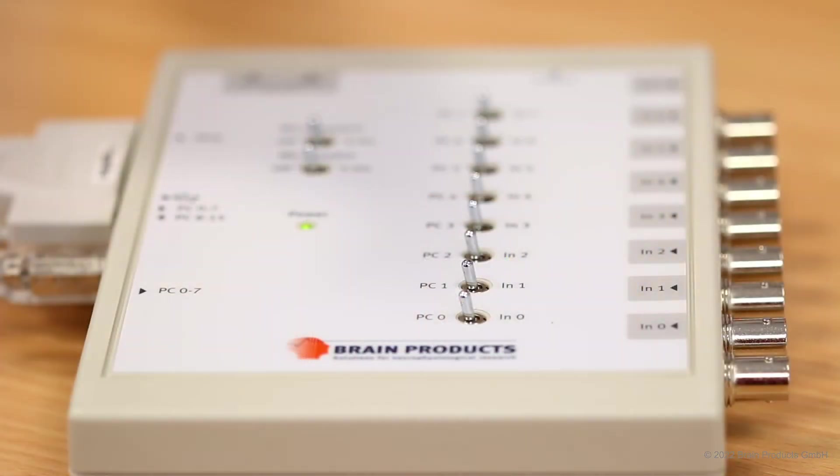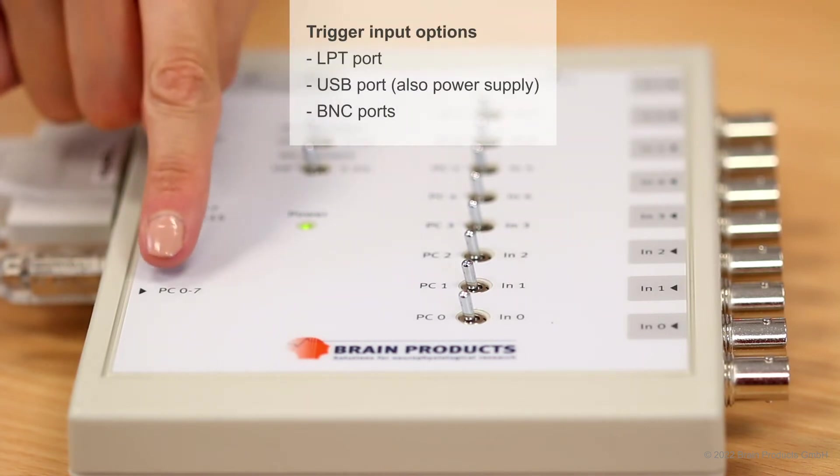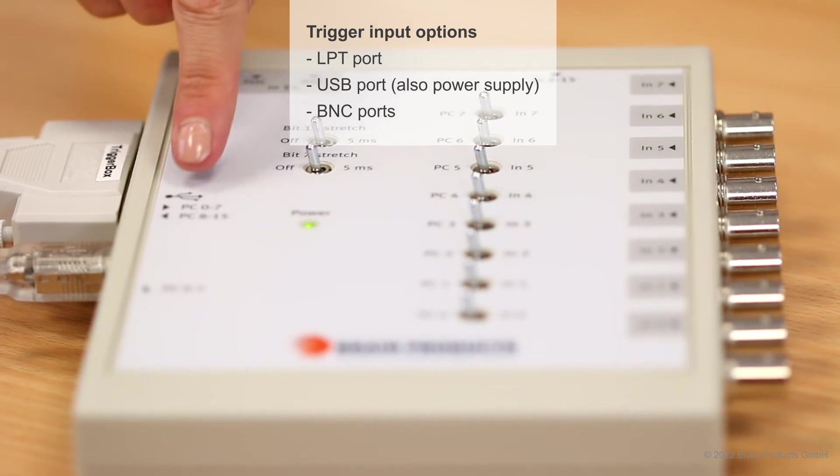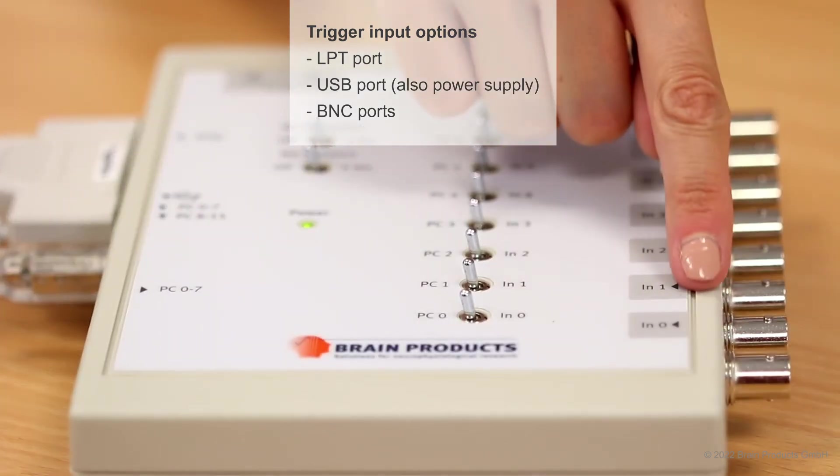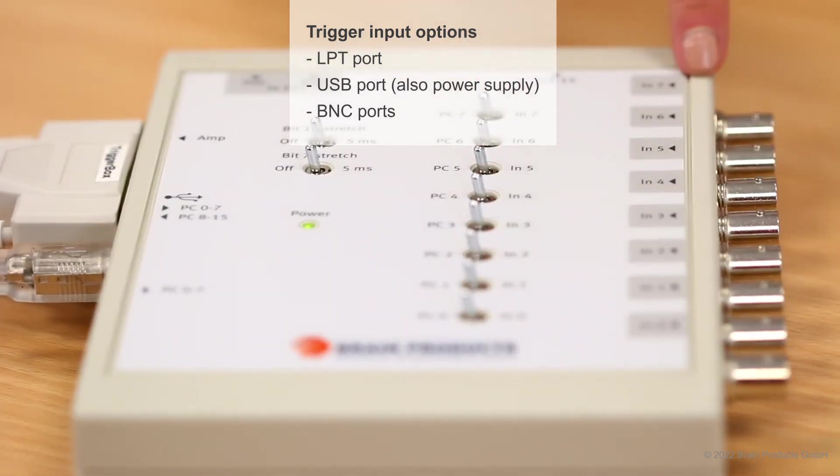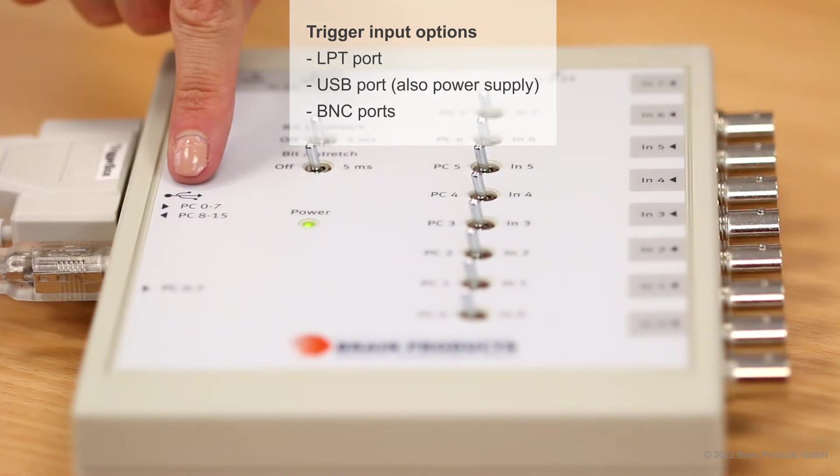Now, you can connect the trigger box to your trigger source. This can be done via the input LPT port, the USB port, or the BNC inputs. As previously mentioned, the USB port will be used for powering the trigger box as well as for delivering triggers.